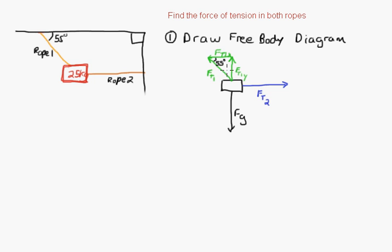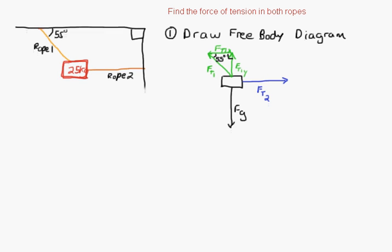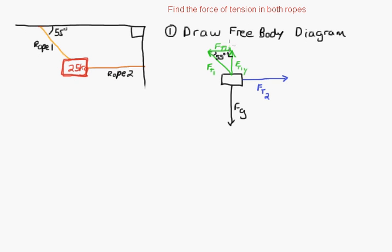So now I've set up my free body diagram with a right angle in there. That's the very first step you always do in any force question. If you don't have your free body diagram set up correctly, it's very difficult to do these questions. Label all your forces: force gravity going down, force tension two horizontal, and force tension one split into x and y vector components.